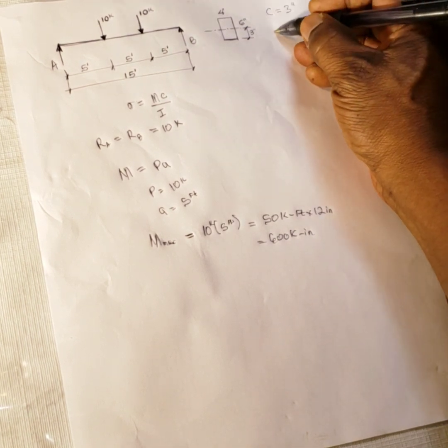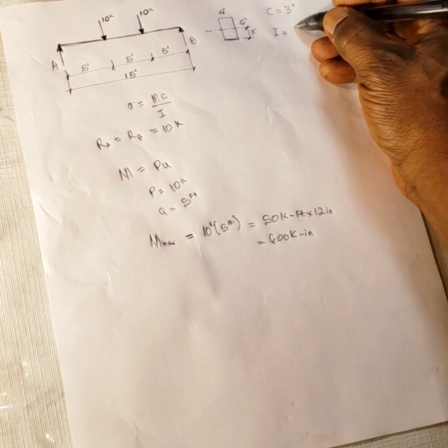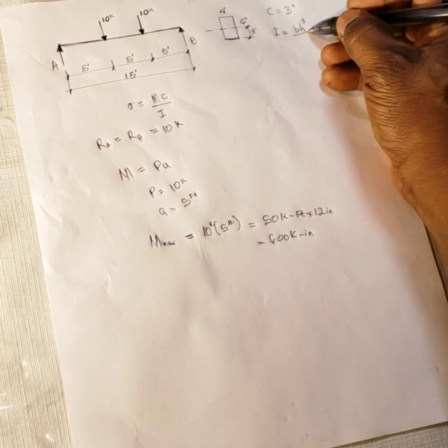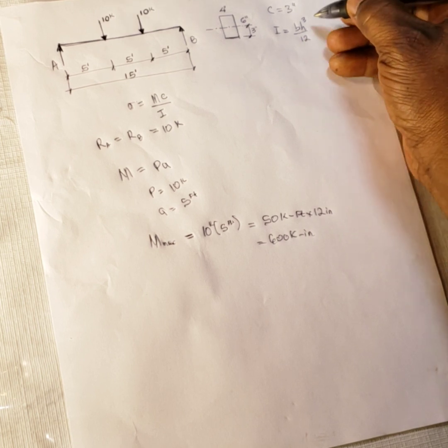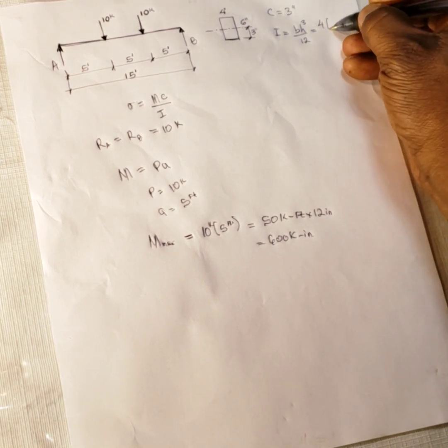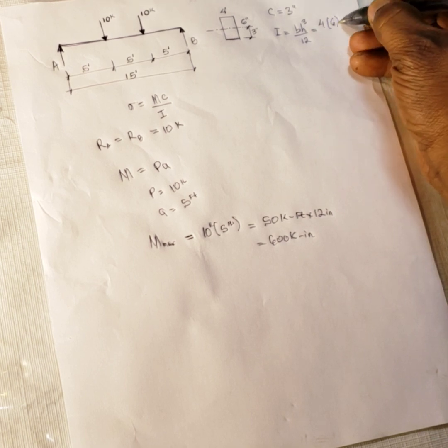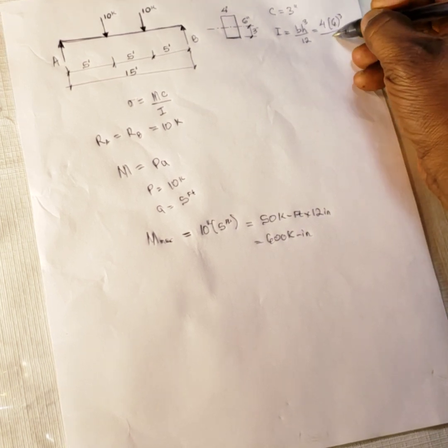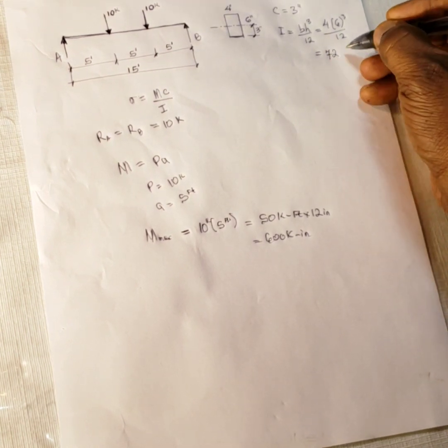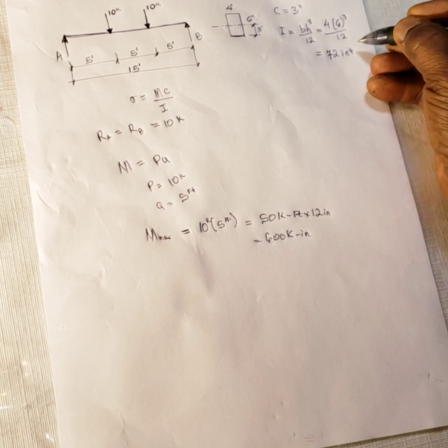The next thing is we want to calculate the moment of inertia. Moment of inertia is given by b h to the three power over 12. And you substitute the value, b is four, h is six, raised to the power three, divided by 12. When you do the calculation, you have it as 72 inches to the fourth power.